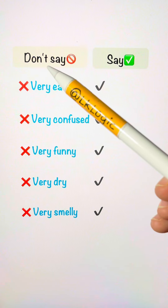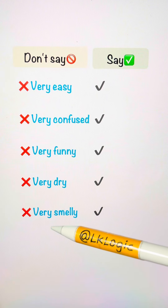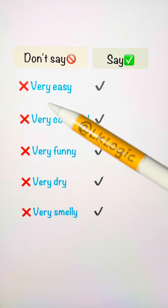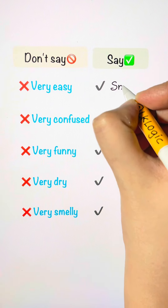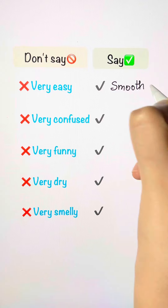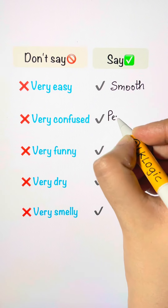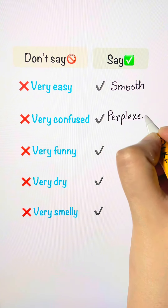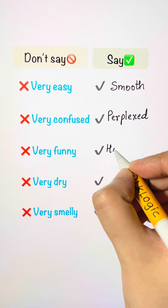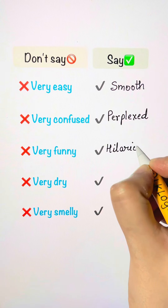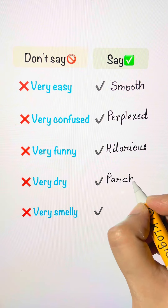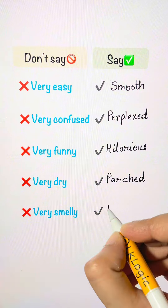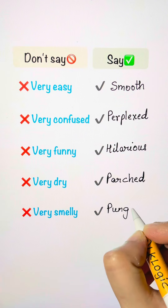Can you all please stop saying "very, very, very" all the time? Instead, why can't you say this? Instead of very easy, you can say smooth. Very confused — you can say perplexed. Very funny — you can say hilarious. Very dry — you can say parched. Very smelly — pungent. Easy, right?